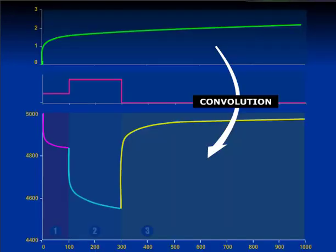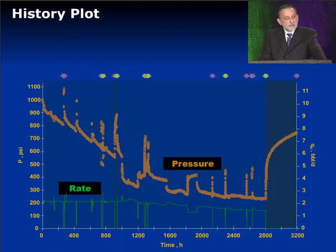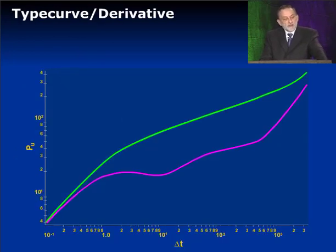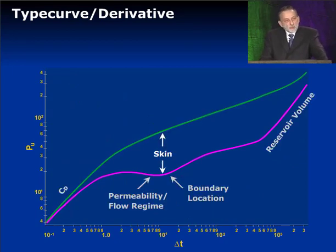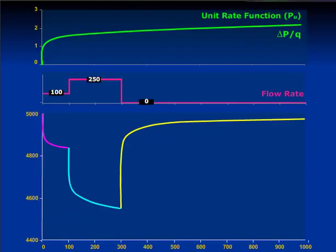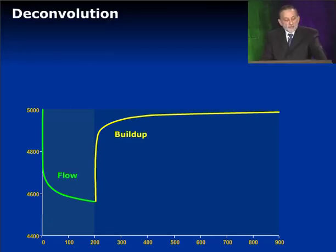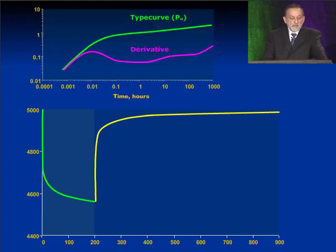Now let's talk about deconvolution. Deconvolution, as you guessed, is the reverse of this. What we have is production data — pressure and rates — and we're trying to extract this: the type curve and derivative. Now you know why we need them, because they describe our reservoir for us. Rather than show you a multirate situation, I'm going to show you just a flow and buildup situation. Here's our data — we've measured the flow and buildup — and we're going to use the reverse procedure to generate the unit rate function, the type curve, and its derivative.